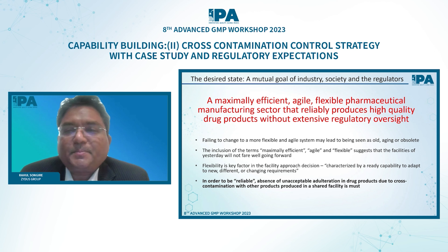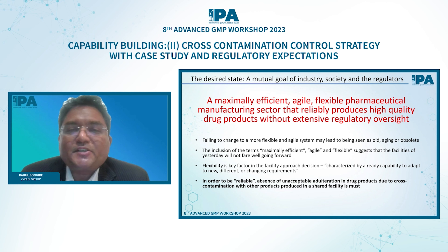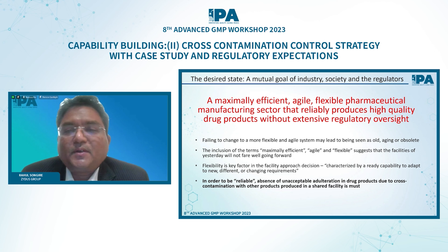This is the vision statement from 2005 — this topic is very decades old. This is the FDA vision statement, and other regulators have similar types of vision, where it is clearly mentioned: maximally efficient, agile, flexible manufacturing sector that reliably produces high quality drug products without extensive regulatory oversight. So the important words here are efficiency, agility, flexibility, reliability, and extensive regulatory oversight.